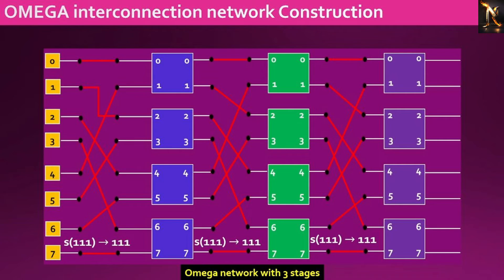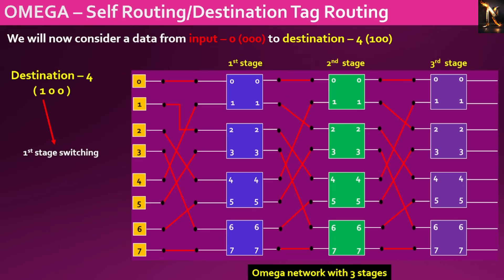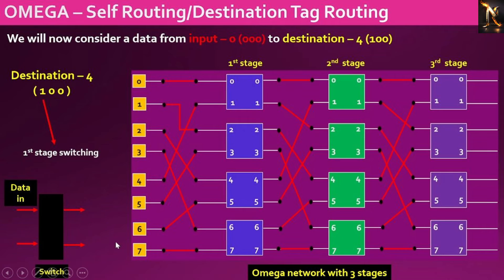Following this technique, we can now see the fully connected omega interconnection network. Now let's examine the operation of the omega interconnection network. Consider a data packet routed from port 0, represented as 000, to the destination port with the address 100. The routing technique employed is known as destination tag routing or self-routing. Each bit of the destination port serves as the switching information for each stage. The first bit, MSB, determines the switching action for the first stage. Since it is 1, the data will be directed to the lower port of the first stage switch.